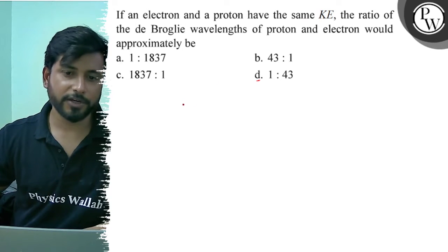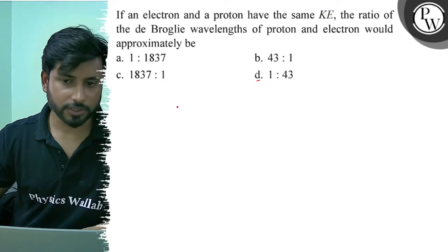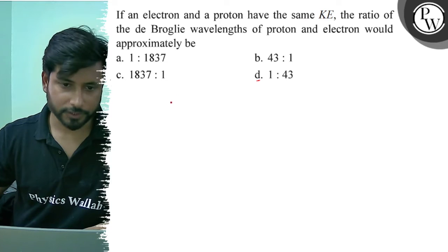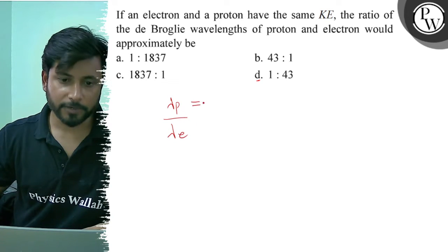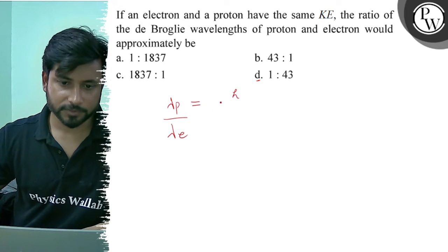Electron and proton have the same de Broglie wavelength, proton and electron. Ratio of lambda P and lambda E. So, what will be lambda P? H upon root under 2, mass of proton and kinetic energy E.